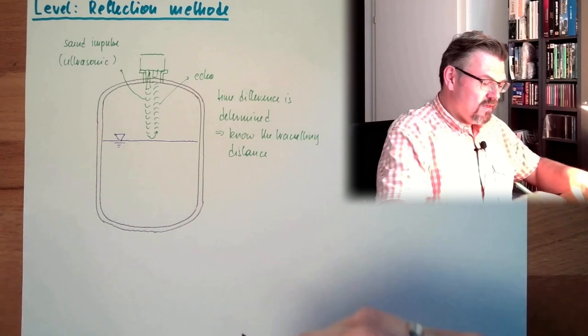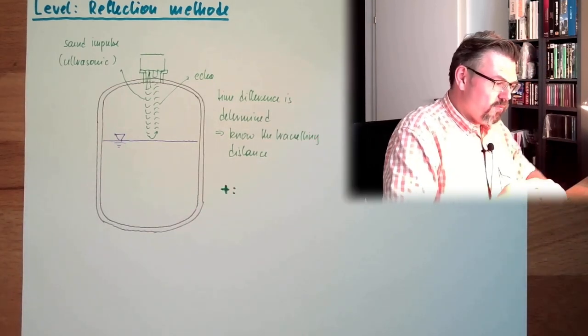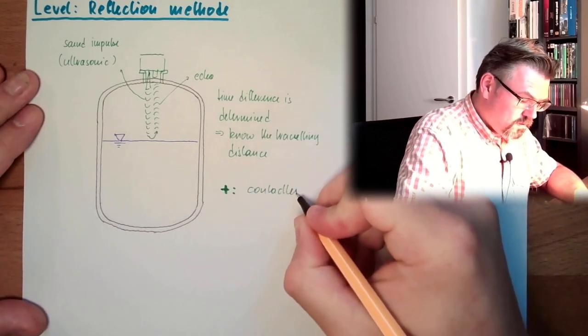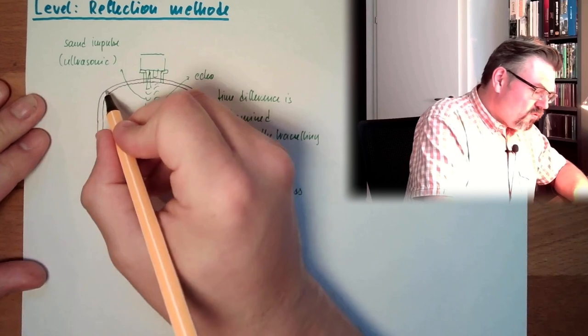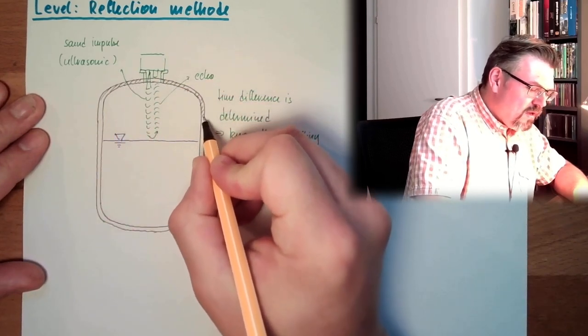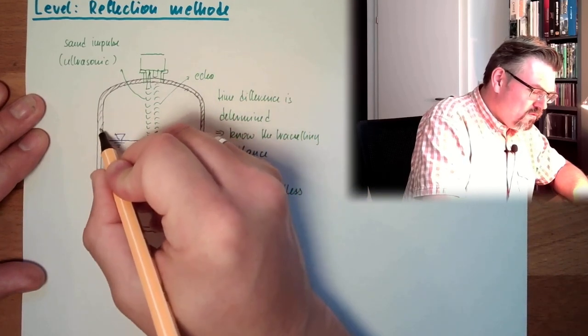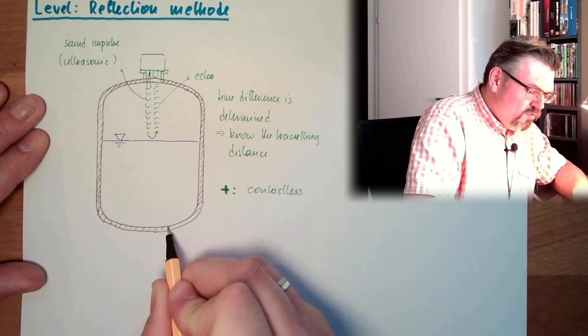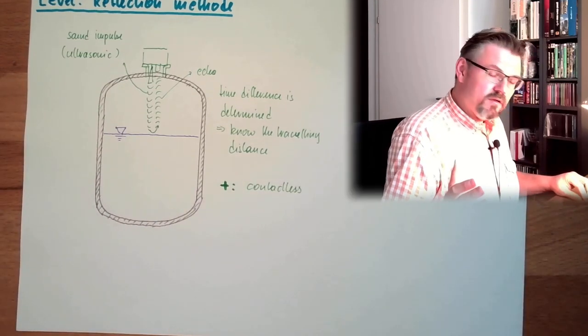So what are the upsides here? A clear upside is, of course, it's contactless. So we have contactless measuring, so this means it's suitable for all different sorts of goods. So it can be aggressive goods, it can be very hot, very cold, or things we usually don't want to touch with anything. Can be dirty, can be whatever. We are not in contact with the medium.